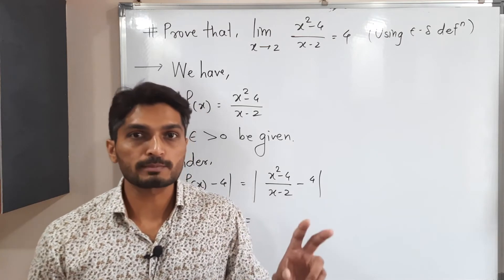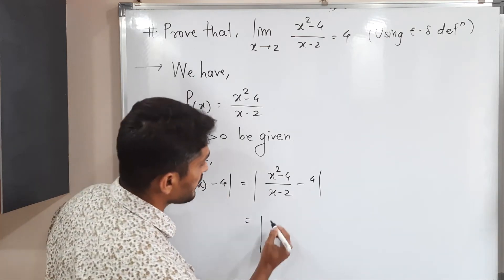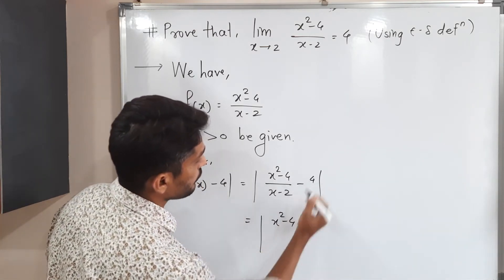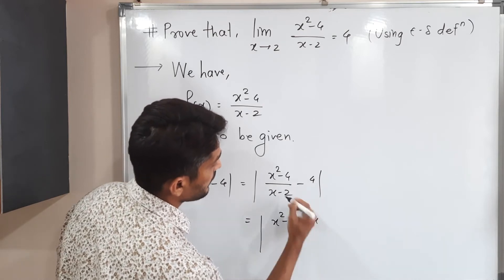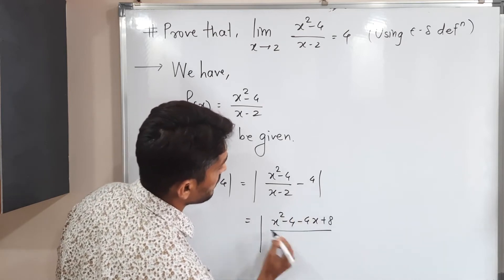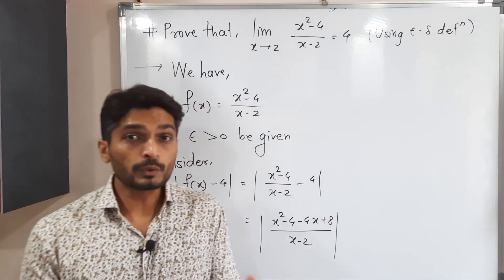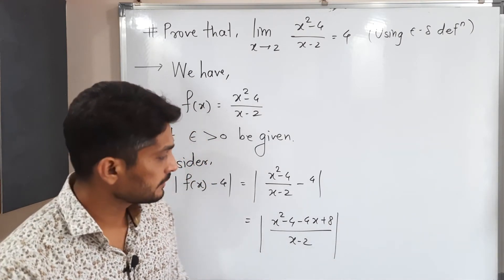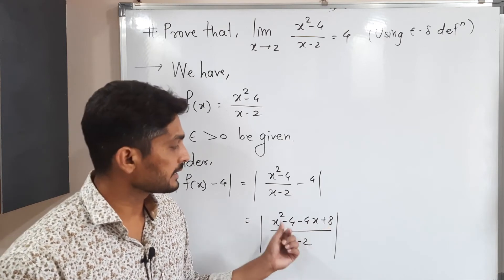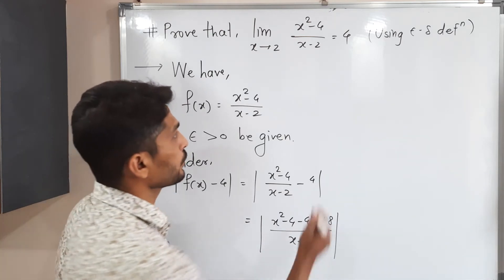Can you tell me what can we do now? Yes, definitely we can cross multiply. So if you cross multiply x square minus 4, if you cross multiply minus 4x minus minus plus 8 divided by x minus 2. So few terms probably will get cancelled. Yes.